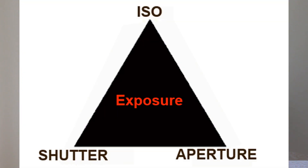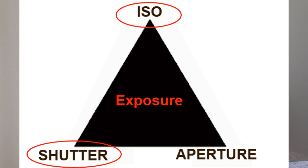I'm sure you're all familiar with the exposure triangle. The exposure triangle shows the three functions of the camera that are used to get proper exposure. First is the ISO, which is the sensitivity of the sensor itself — in other words, what amount of light would the camera need to get proper exposure? The second is the shutter speed, or how long will we allow the light to enter the camera?